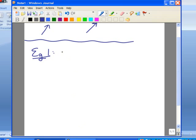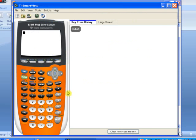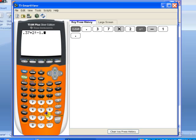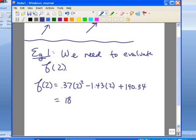This is example 1. We need to evaluate f(2), so that means we take 2 and plug it in wherever we see an x. We have 0.37 times 2² minus 1.43 times 2 plus 190.34. Let's put that in our calculator: 0.37 times 2² minus 1.43 times 2 plus 190.34. When we evaluate that, we get 188.96.